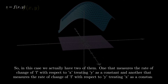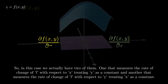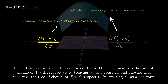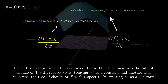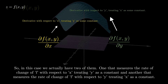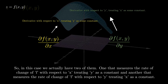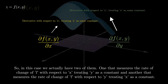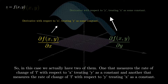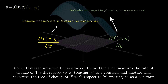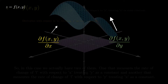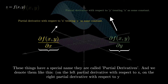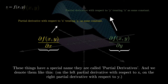In this case we actually have two derivatives: one that measures the rate of change of f with respect to x treating y as a constant, and another that measures the rate of change of f with respect to y treating x as a constant. These are called partial derivatives.